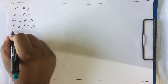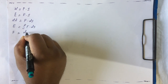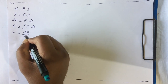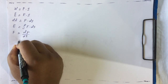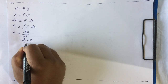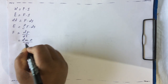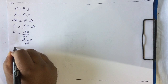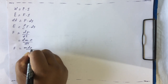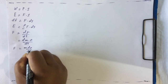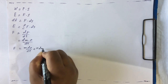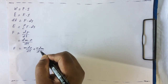From Newton, we know that force is the rate of change of momentum, where P is mass times velocity. If we differentiate this equation, force will be m dv/dt plus v dm/dt.